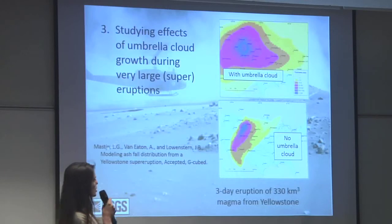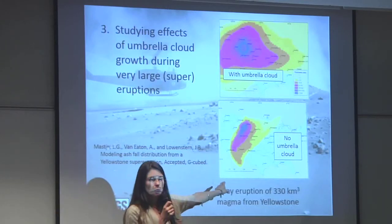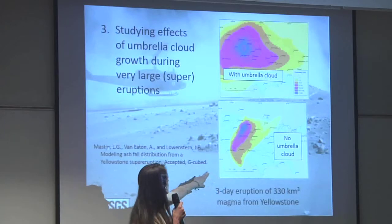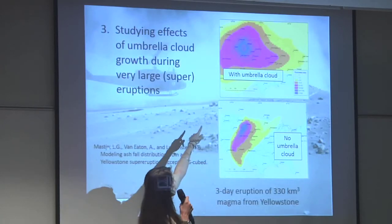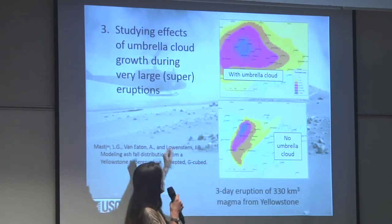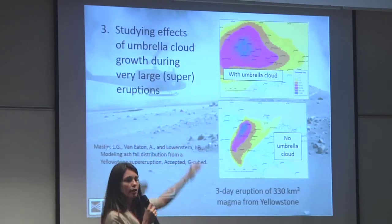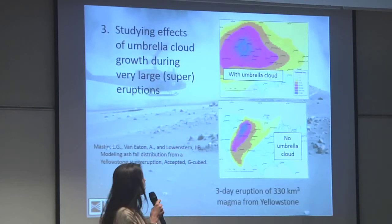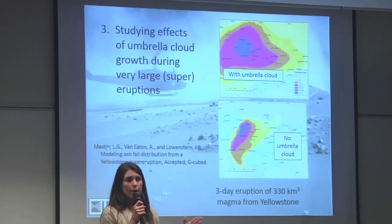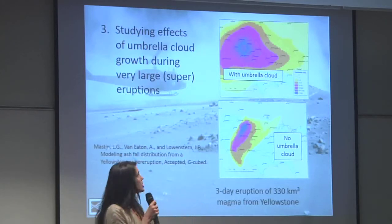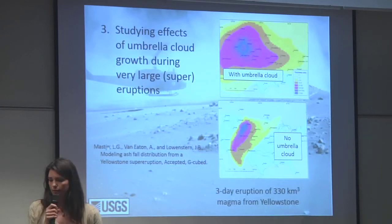This is an interesting comparison between a Yellowstone super eruption in modern-day winds without an umbrella cloud and the same eruption with one. You can see an almost radially symmetric dispersal of ash products if you account for that really powerfully spreading umbrella. This shows it's a huge player in very large eruptions.